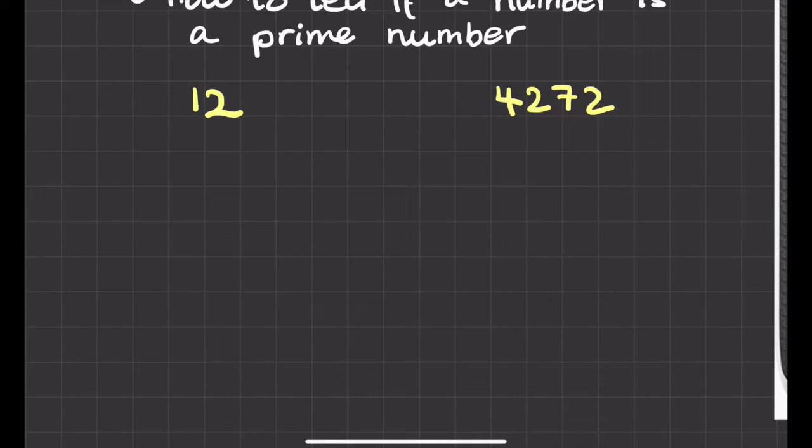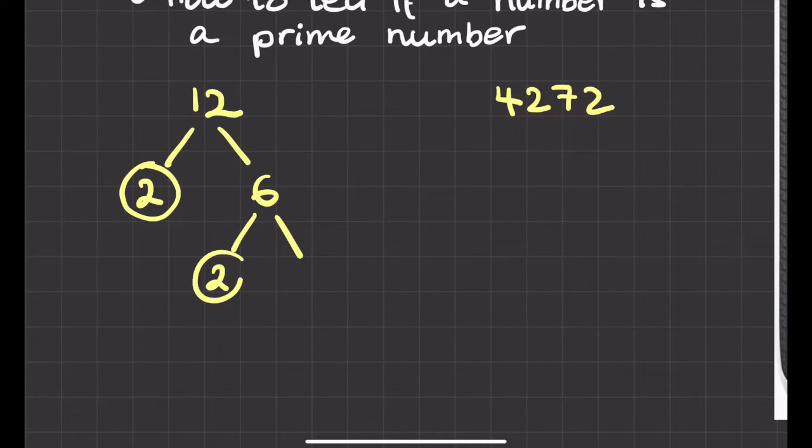So 12, I can split that up by doing 2 multiplied by 6. There are other ways I could do it. There are other trees but this is just one option that we could go for. Now 2 is a prime number so I'm going to circle that and I'm going to stop there. But 6 isn't. I can actually think of some factors for 6. So I could have 2 and 3. And now because all of my branches have come to an end, this factor tree is complete.